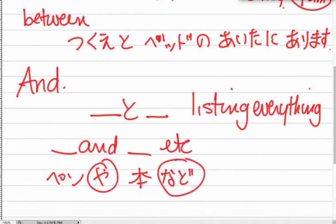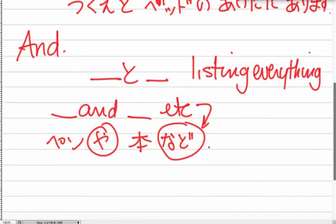So ya says this is an and, but I'm only giving you one or two of the things, and nado is kind of our version of etc. So you will say pen ya hon nado ga arimas.